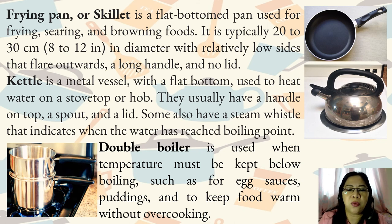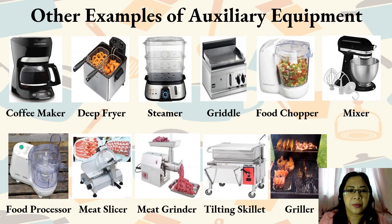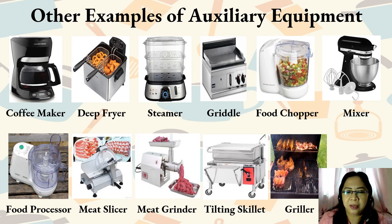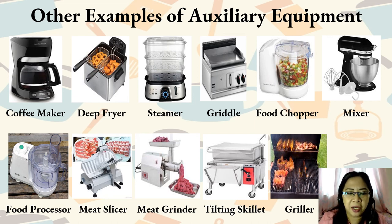Double boiler is used when temperature must be kept below boiling, such as for egg sauces, puddings, and to keep food warm without overcooking. Other examples of auxiliary equipment include the coffee maker, deep fryer, steamer, griddle, food chopper, mixer, food processor, meat slicer, meat grinder, tilting skillet, and the griller.